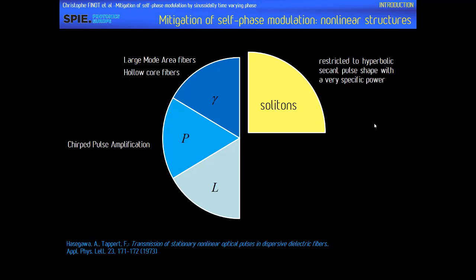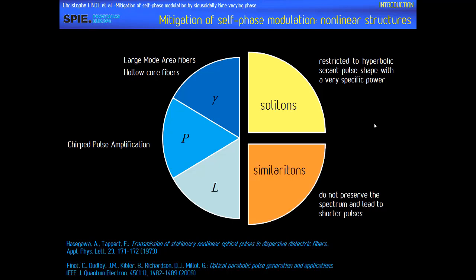There are other strategies where you can take advantage of the nonlinearity. For example, you can use solitons, where you have an exact balance between the self-phase modulation and the phase induced by second-order dispersion. However, those pulses are highly restricted in terms of initial pulse shape as well as input pulse energies. Another structure is the similariton, where the spectrum does not experience strong fluctuations, but the nonlinear pulse still broadens in the frequency domain — the spectrum is not preserved — and you obtain shorter pulses, which could be beneficial for various applications.